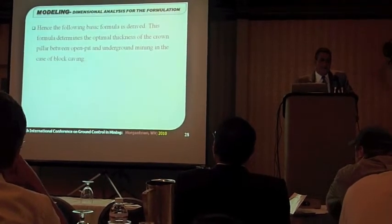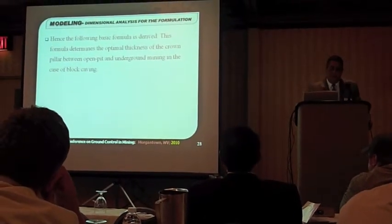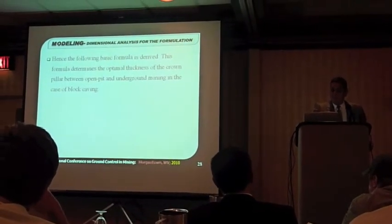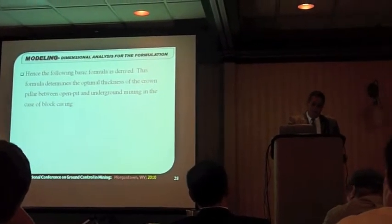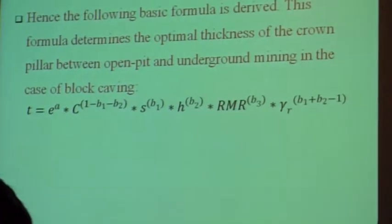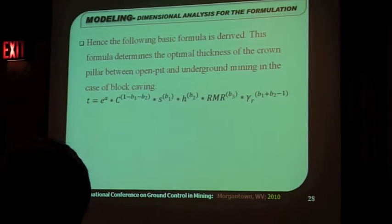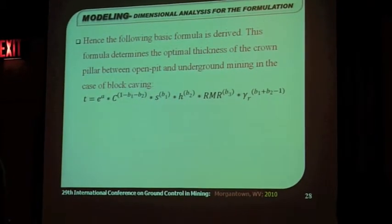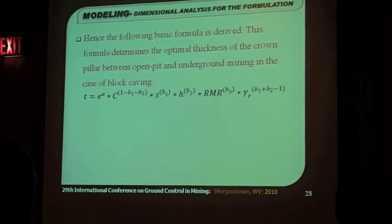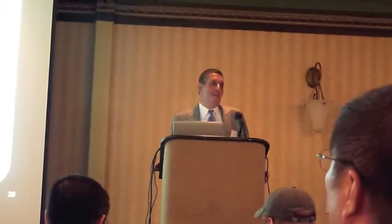And therefore, in this way, this formula is derived. It is obtained that determines the optimal thickness of the crown pillar between open pit and underground mining in the case of block-caving method being used. This is our basic formula. The only thing is that it has some values, some variables in it. New variables A, B1, B2, and B3, which we don't have. And we are going to find them by using some real examples, some cases, some real cases in four different places in the world.